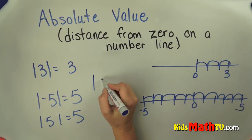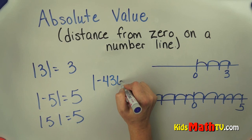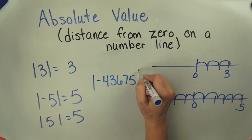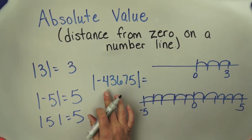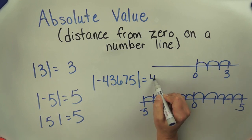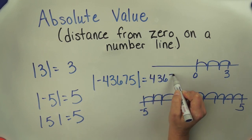You could take any, even a really large number, such as negative 436.75. How many spaces from zero is that? Well, it's simply 436.75. And it's always positive because it's jumps from zero.